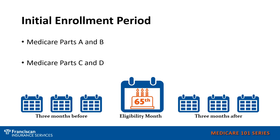Let's start with the initial enrollment period. This is when you can enroll in your Medicare Part A and Medicare Part B, which is your original Medicare. You can also enroll in Medicare Part C Advantage plans and your Medicare Part D prescription drug plans. The initial enrollment period starts three months before you turn 65, then the month you first become eligible when you turn 65, and then three months after you turn 65. During this time, you can enroll at any point for Medicare Part A, B, C, and D.